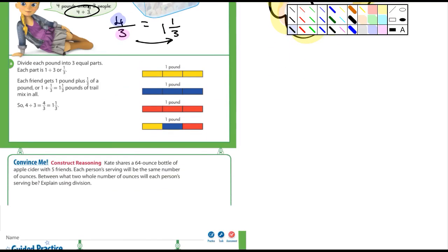What does that say? It says Kate shares a 64-ounce bottle of apple cider with five friends. Each person's serving will be the same number of ounces. Well, I mean, so let's just look at this here. So what are we talking about? We're talking about 64 over five, because what's being divided? It's a 64-ounce bottle of apple cider. It's not the friends. We're not dividing the friends. So what's being divided is always on top. Remember that. Talked about that yesterday.